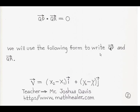We will use the following form to write vector QP and vector QR. Given a general vector v, it can be written as (x₂ − x₁) times the unit vector i, plus (y₂ − y₁) times the unit vector j. Here, i is in the horizontal direction and j represents the vertical direction. The x₂ − x₁ term gives us the component along the x-axis, and y₂ − y₁ gives us the component along the y-axis.